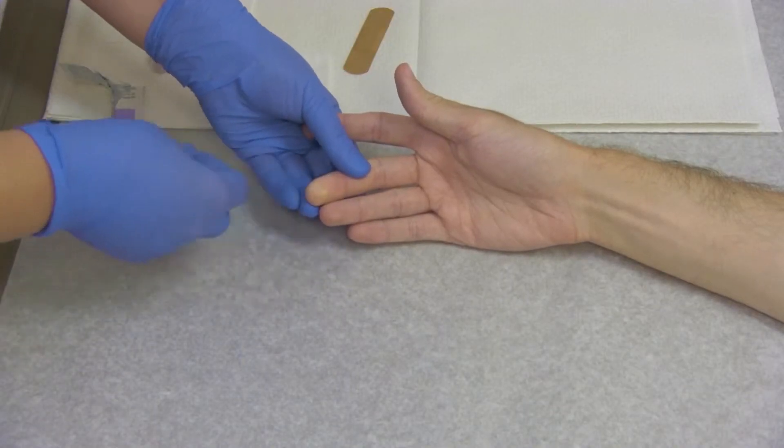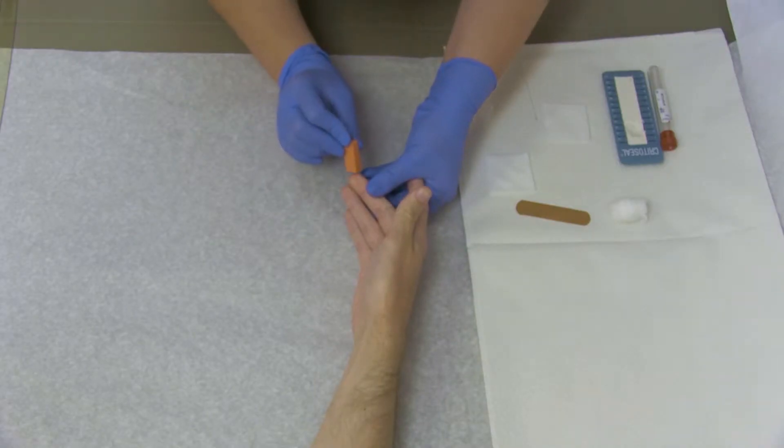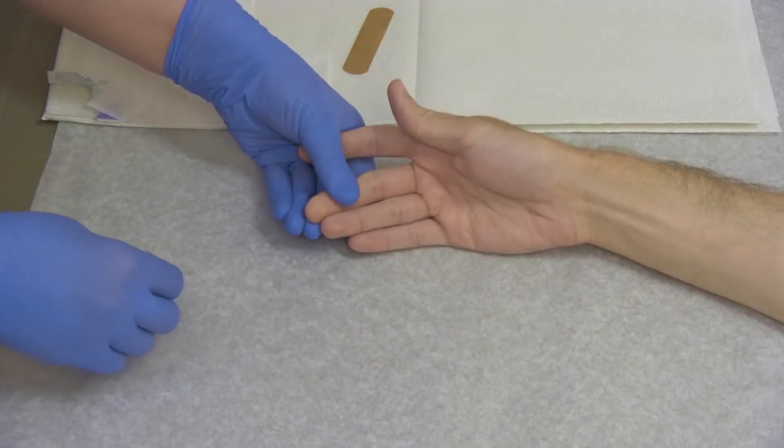Clean the site with alcohol and let it air dry. Hold the finger firmly, pulling the skin tight, and perform the puncture at the tip of the fleshy pad, slightly to the side of the center.